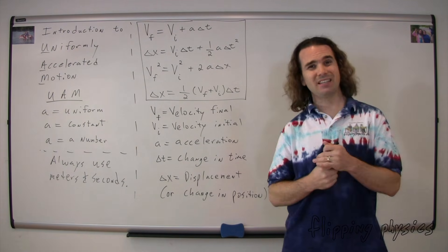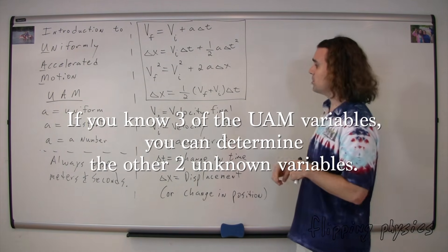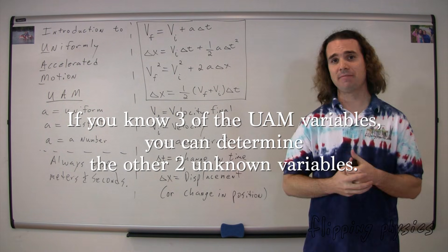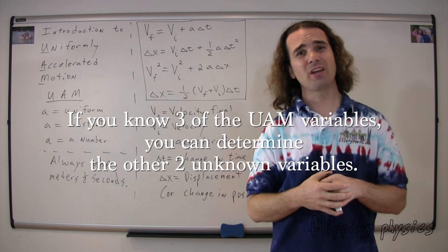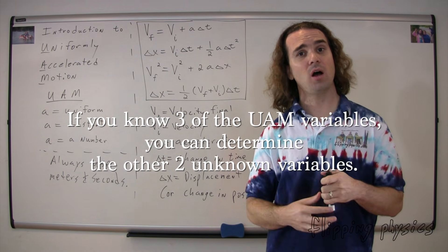Now, the way it works is this. If you know three out of the five UAM variables, you can actually figure out the other two unknown variables.